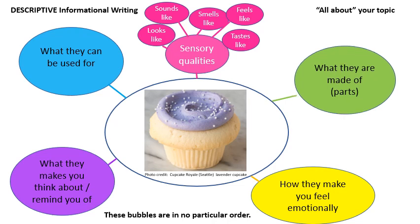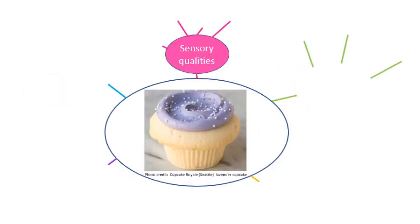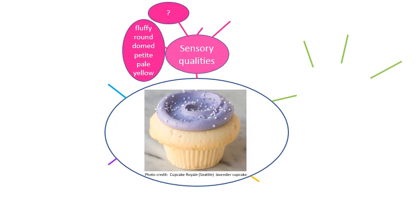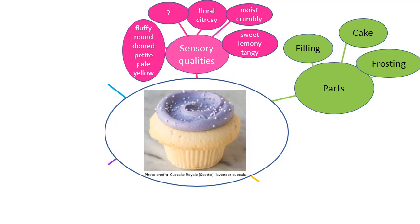Let's look in more detail about writing about sensory qualities. We use sensory detail and imagery in our narrative writing, and we can also use the same type of imagery in our informational writing. You're going to want to describe how those lemon-lavender cupcakes look, sound, taste, smell, and feel. To look at them, they're fluffy, round, domed, and petite — pale yellow. The smell is floral and citrusy. The feeling is moist and crumbly. The taste is sweet, lemony, and tangy. My favorite cupcakes have several different parts: the cake, the filling, and the frosting, and I could go through the sensory qualities of each of those things separately.